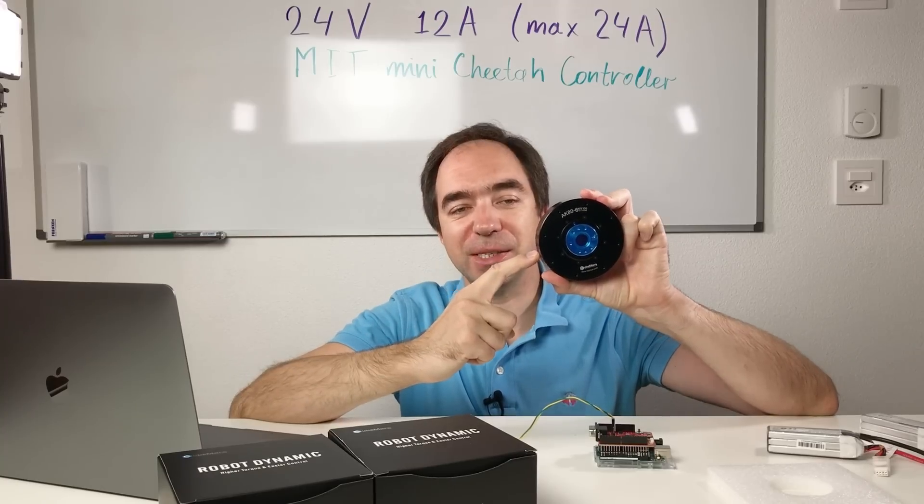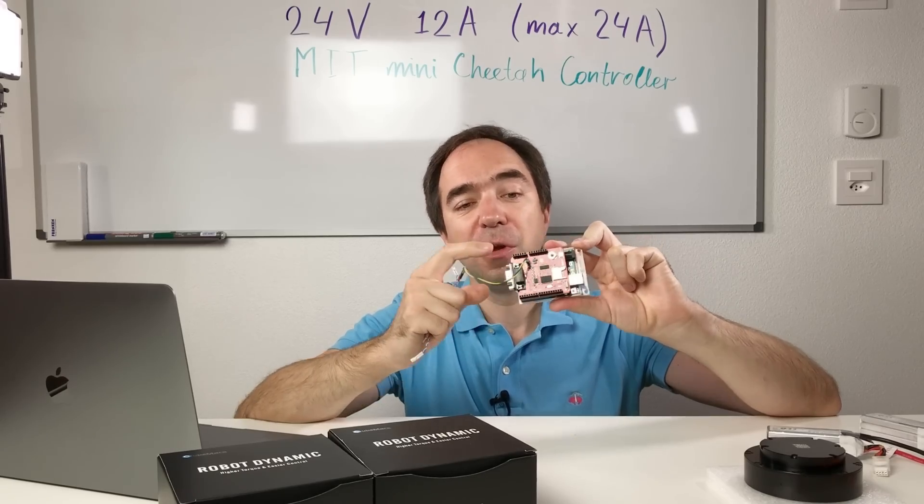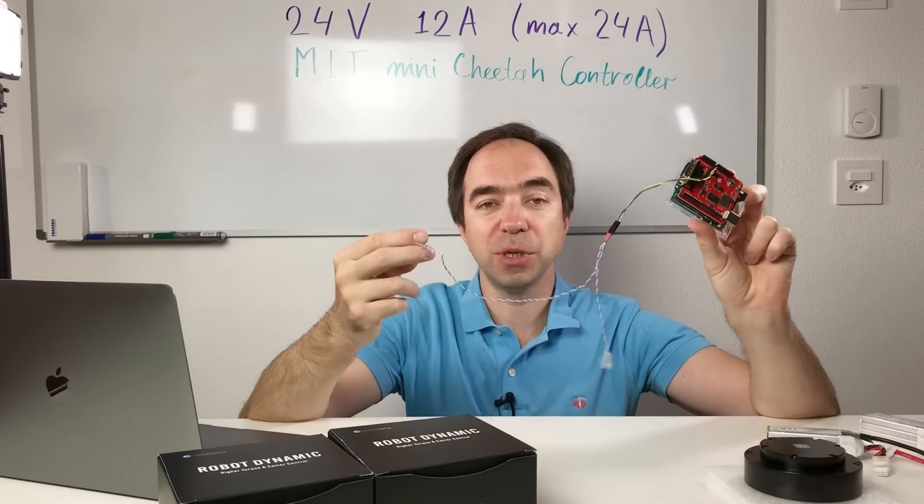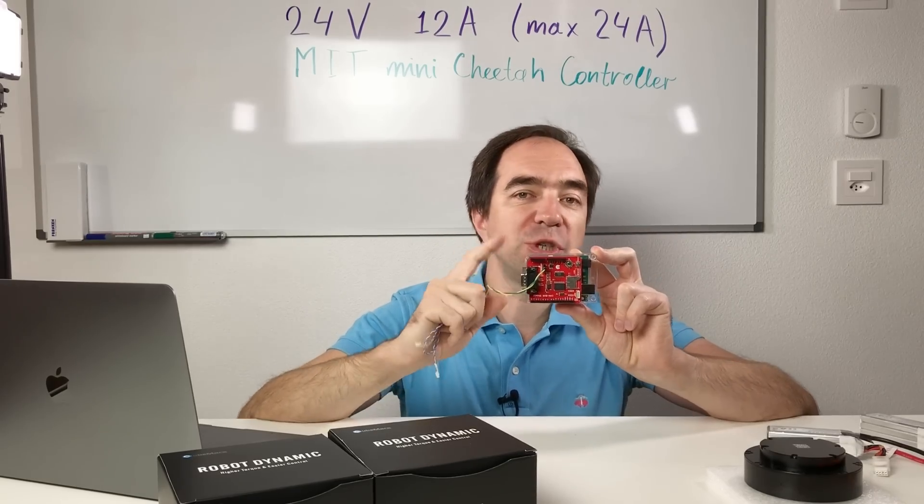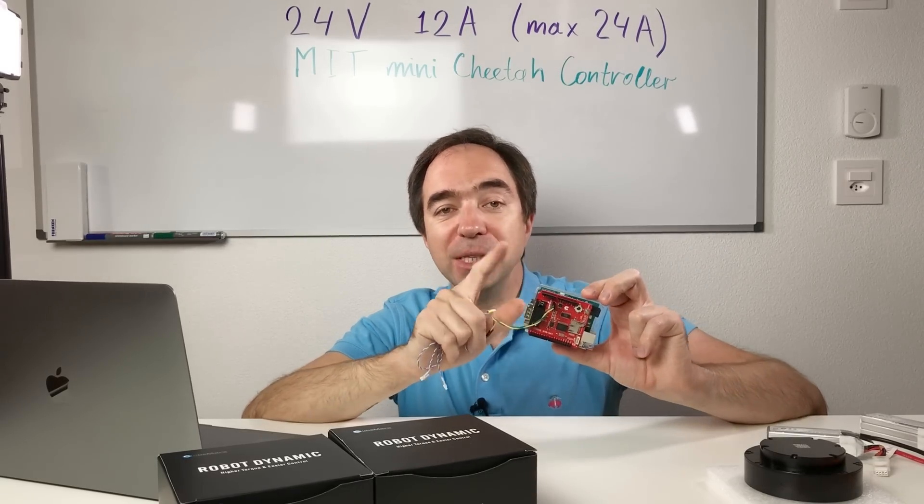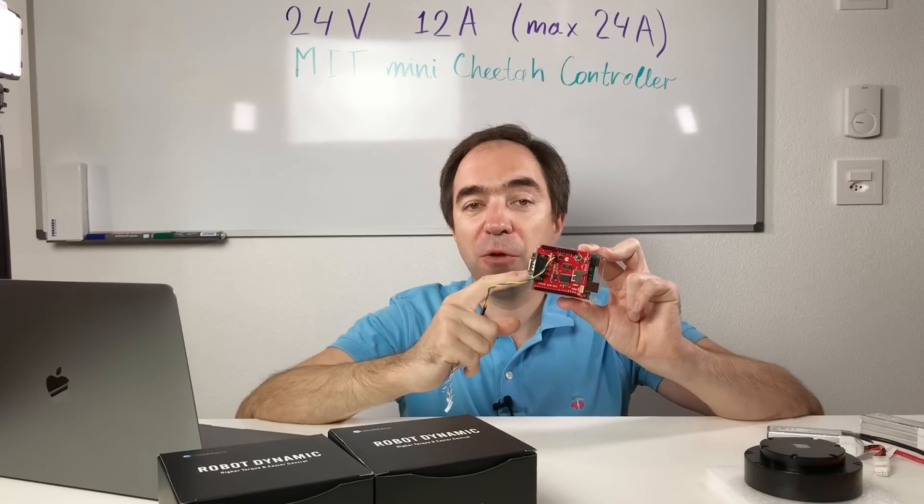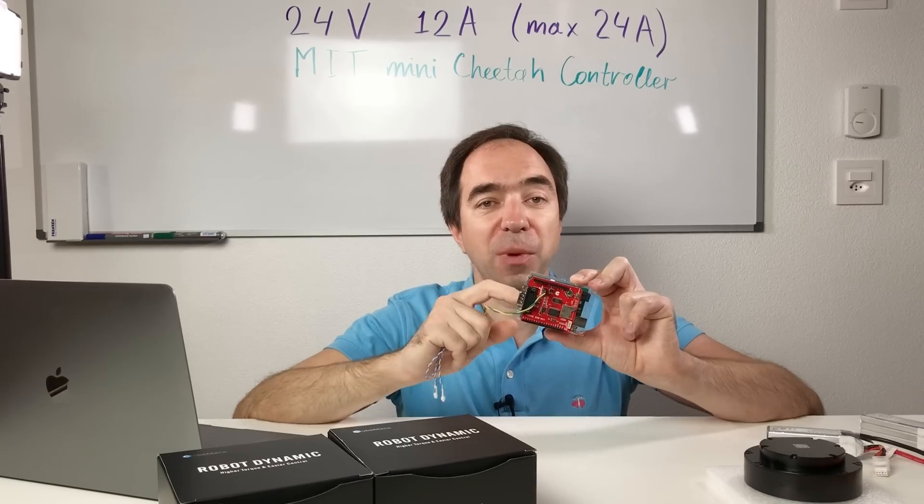And now let's look at the CAN bus. For this I prepared Arduino with the CAN bus shield and also the wire with appropriate termination resistor. For Arduino I'm going to use the same code which I used in my previous video about MIT Mini-Cheetah controller. So if you want to learn more about this, check my previous video.